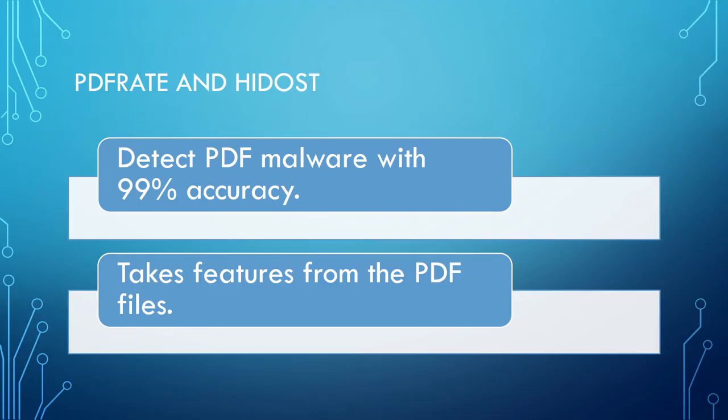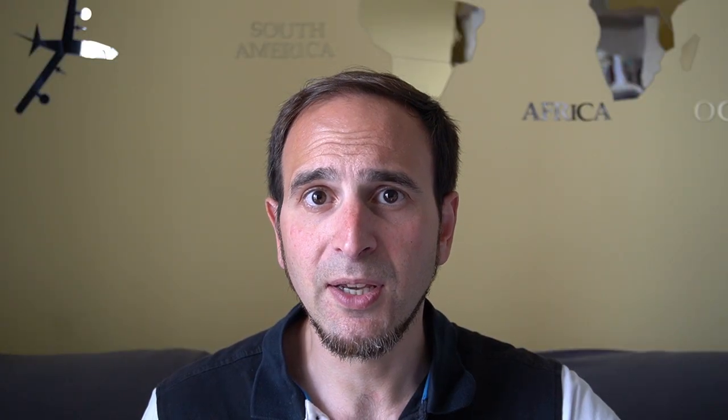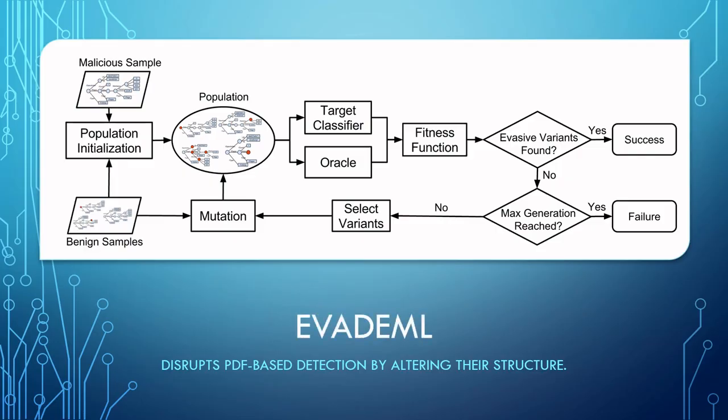So when did this start, or some of the popular examples? If you remember, there were two detectors of PDF malware that were very popular, that were called PDFrate and Hidost. And basically in 2017, if I remember properly, there was this tool called evadeML that was basically created to disrupt PDF malware detection.